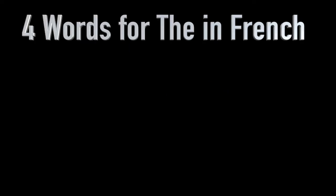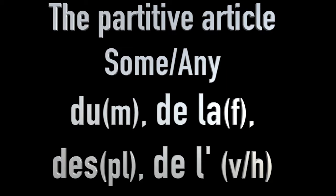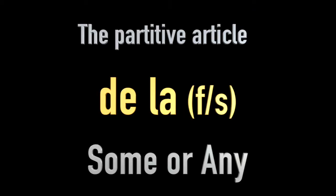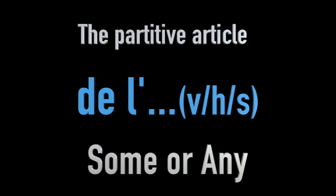Just like there are four definite articles — four words for 'the': one for masculine singular nouns, one for feminine singular nouns, one for all plural nouns whether masculine or feminine, and one for singular nouns that begin with a vowel or H to make sure they flow — there are four partitive articles. There are four words for 'some' or 'any', and they follow the same logic as the definite article, varying whether the noun is masculine singular, feminine singular, plural, or begins with a vowel or an H.